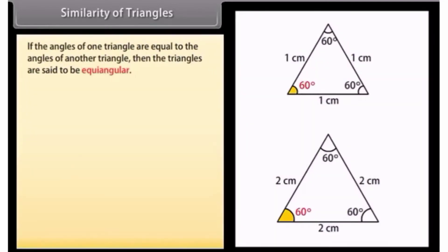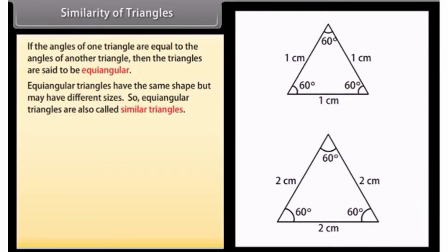Similarity of triangles. If the angles of one triangle are equal to the angles of another triangle, then the triangles are said to be equi-angular. Equi-angular triangles have the same shape but may have different sizes. So, equi-angular triangles are also called similar triangles.